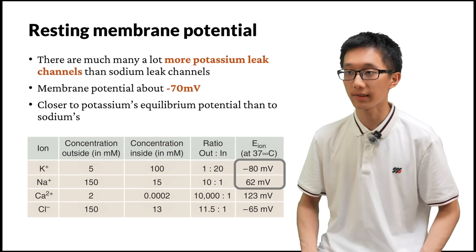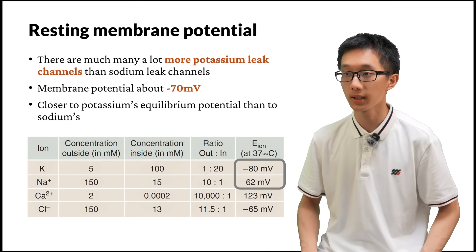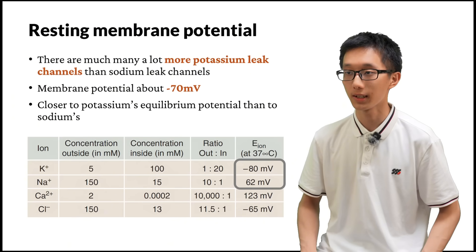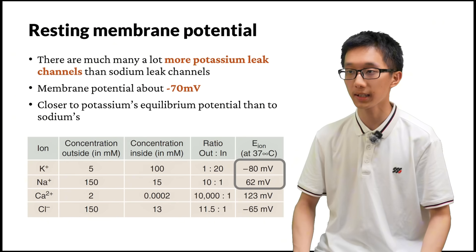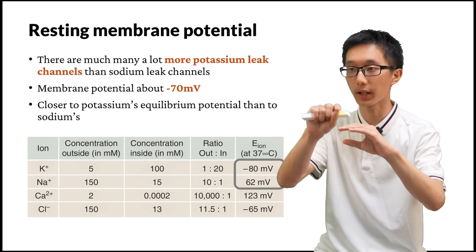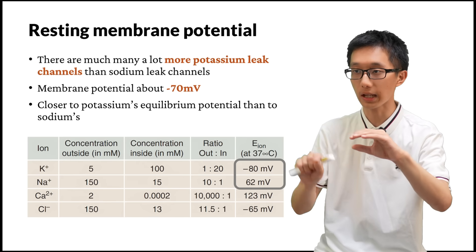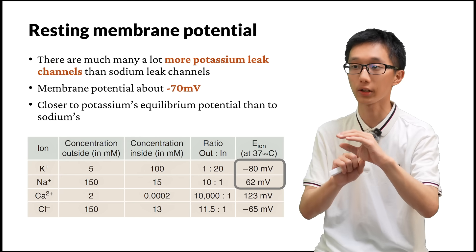In some textbooks you may see other values for the resting membrane potential — for example, −65 millivolts. There is only a small difference between these values, which may be due to methodological differences or differences between individual cells. Any value close to −70 millivolts is acceptable, and it is recommended you remember −70 millivolts. The minus sign is with respect to the outer side of the membrane — if the outer side is 0 millivolts, then the inner side is −70 millivolts. The intracellular fluid has negative charge compared to the extracellular fluid.